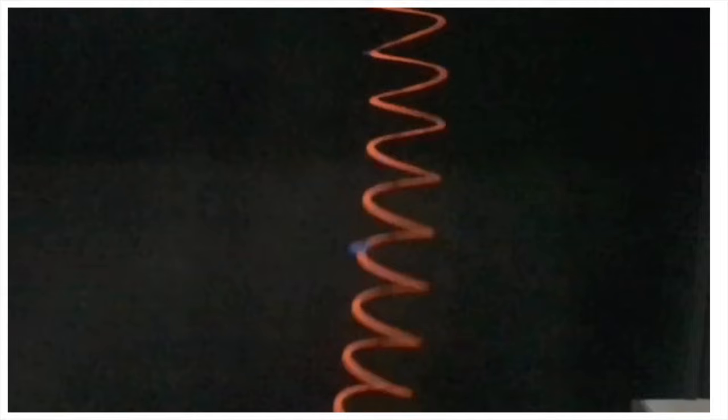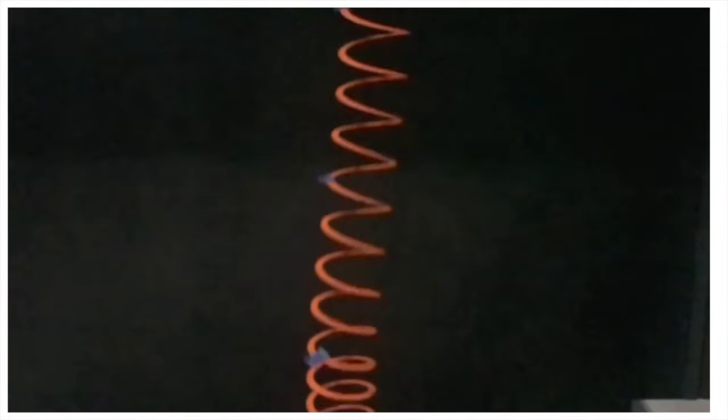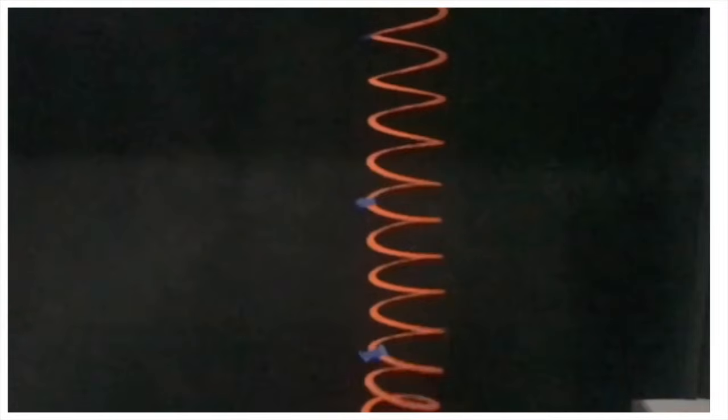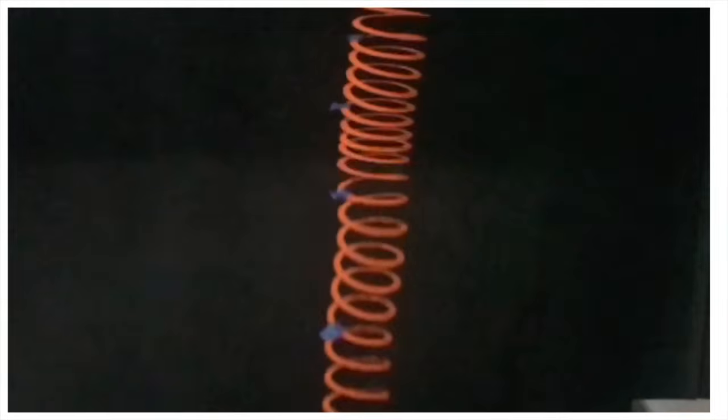Longitudinal waves can be demonstrated with a slinky. Take a look at the blue pieces of tape. They represent the disturbance. Notice how the wave is moving up and down from the top of the slinky to the bottom of the slinky, and the blue tape pieces are also moving up and down. They are both moving in the same direction and they are parallel.